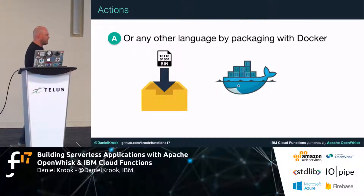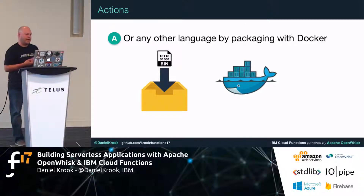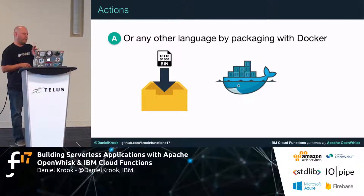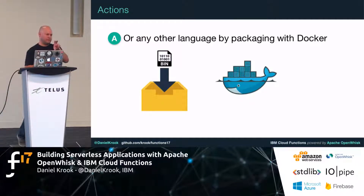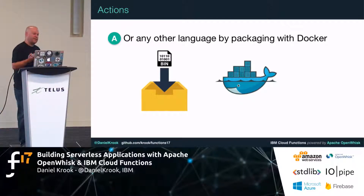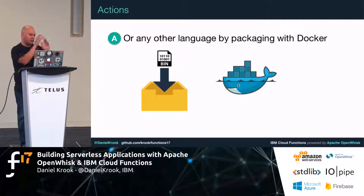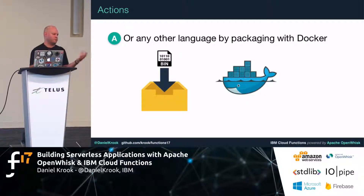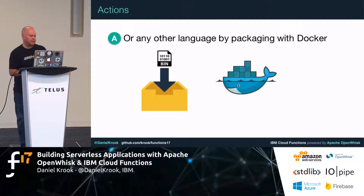If the top-level languages aren't enough, you can take anything and drop it inside a Docker image. As long as you implement a small shim to respond to what OpenWhisk expects as an interface, you can package anything in there. A recent use case I did with this was taking the Tesseract optical character recognition C library, packaging it in a Docker image with a little shim, and using it for high-performance image recognition.